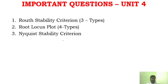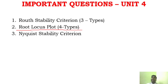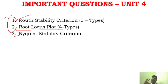Unit 4: root locus is a very very important concept. There are four types of root locus problems — knowing all four types is more than enough. For Part C questions, you should know root stability criterion, Nyquist stability, or at least be able to do root locus plot. Root locus plot is very mandatory — go through all the different types of problems.